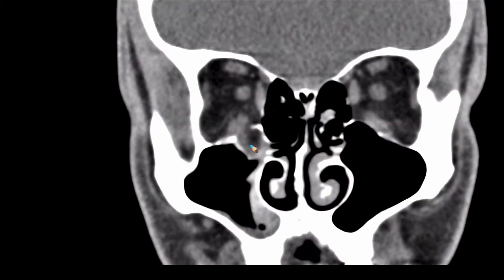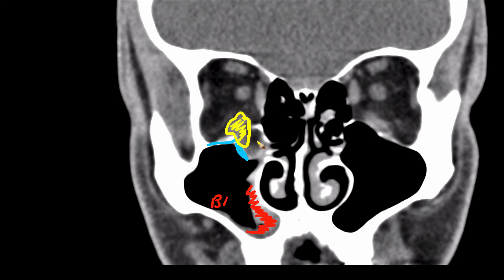Stopping on this slice and looking at the bony margins of the orbital floor, there is another depressed fracture. This time there is layering of blood in the floor of the maxillary sinus. There is also herniation of the inferior rectus muscle through the fracture gap, putting it at risk of entrapment, which can manifest as diplopia when the patient is examined.